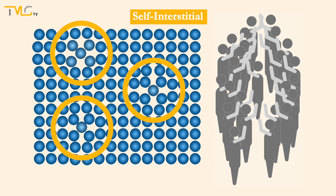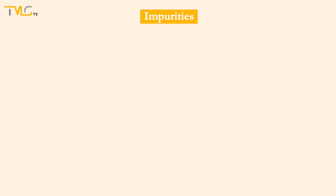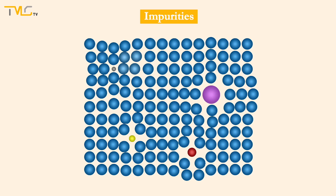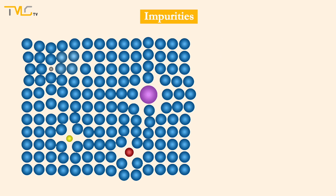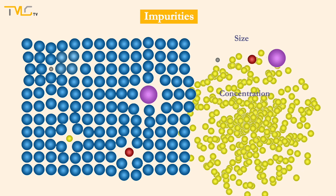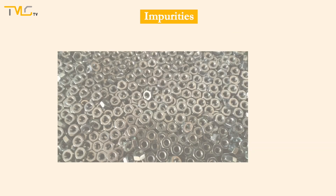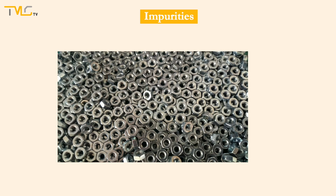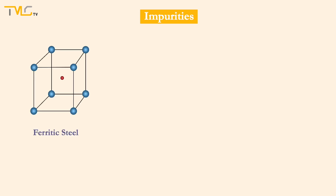So far, we have discussed point defects which can occur in a material consisting of a single element. However, we can encounter impurities, some of which may lead to the formation of point defects. Accommodation of these foreign elements strongly depends on their size and concentration. Alloys are formed via intentional and controlled addition of another elemental or compound material under suitable conditions. Steel is a well-known alloy formed by the addition of carbon solutes to iron.